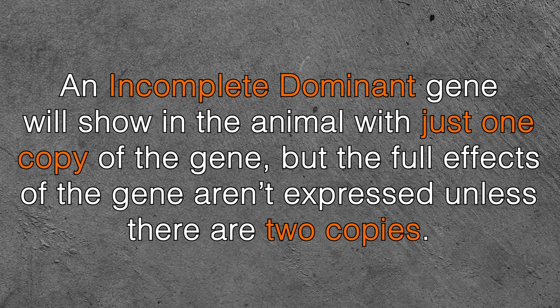The primary one you're going to come across in the hobby is called an incomplete dominant gene. Some people will refer to these as co-dominants or co-doms — that is technically a different gene type. We don't generally come across too many true co-dominant genes in ball pythons, but just know if you hear somebody say co-dom or co-dominant, they're probably referring to an incomplete dominant gene. An incomplete dominant gene will show in the animal with just one copy, but the full effects aren't expressed unless there are two copies. When there are two copies, the animal is homozygous for that trait, and in the hobby that's referred to as the super version of that gene.